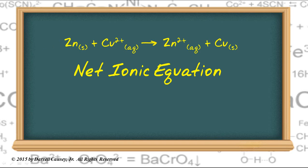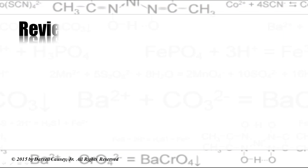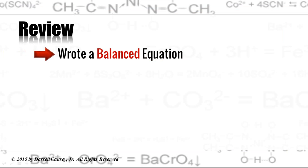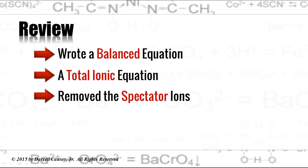All right. If you're not sure what happened there, be sure to go back and rewatch this. And then practice some equations of your own. Let's review. You wrote a balanced equation. Then you wrote a total ionic equation. Remove the spectator ions. And you got a net ionic equation.